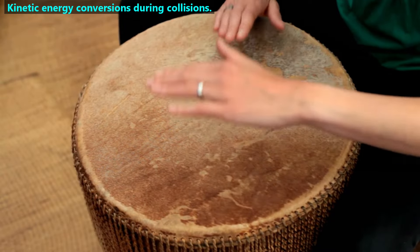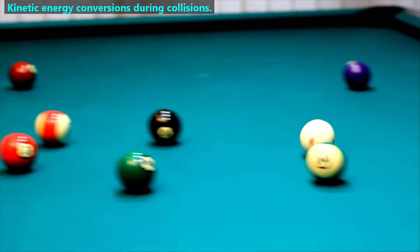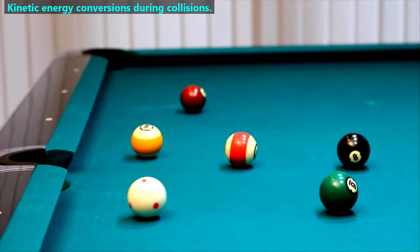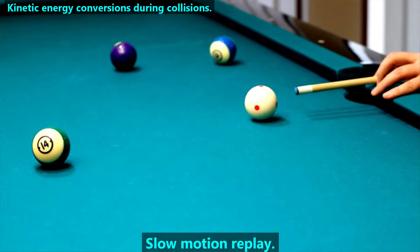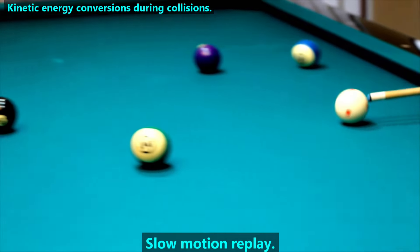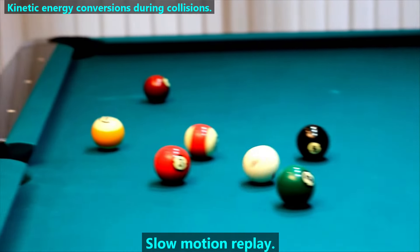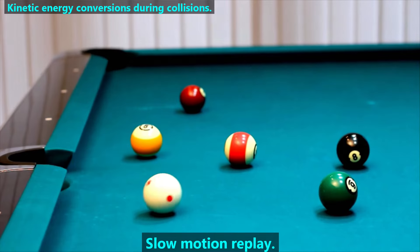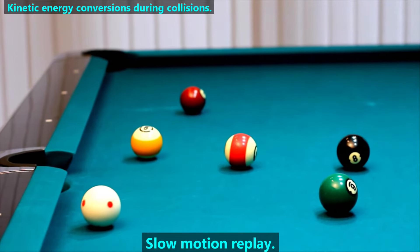Next, let's look at energy conversions during collisions. If we compare the kinetic energy of the white ball immediately before the collision to the kinetic energy of the white ball plus the red ball immediately after the collision, we find that there's less total kinetic energy after the collision.